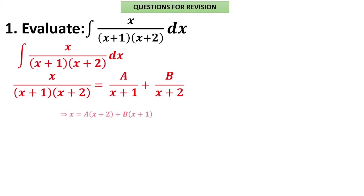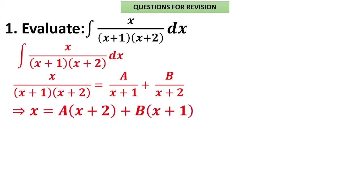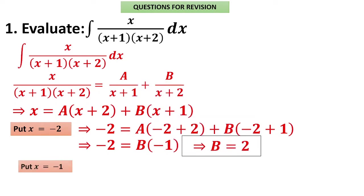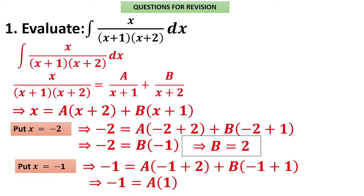To find A and B, cross-multiply to get: x = A(x + 2) + B(x + 1). One method: collect coefficients — coefficient of x gives A + B, constant term gives 2A + B, then equate. Another method: substitute suitable values. Put x = -2 so the coefficient of A becomes 0: -2 = B(-1), so B = 2. Put x = -1 so the coefficient of B becomes 0: -1 = A(1), so A = -1.